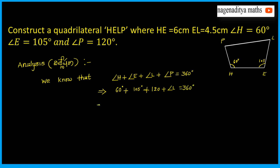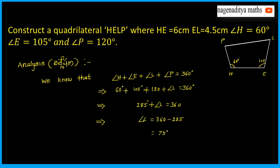So, 60 plus 105 is 165, and 165 plus 120 is 285. So, 285 plus angle L is equal to 360 degrees. This implies angle L is equal to 360 minus 285, that is 75 degrees. So, angle L is equal to 75 degrees.